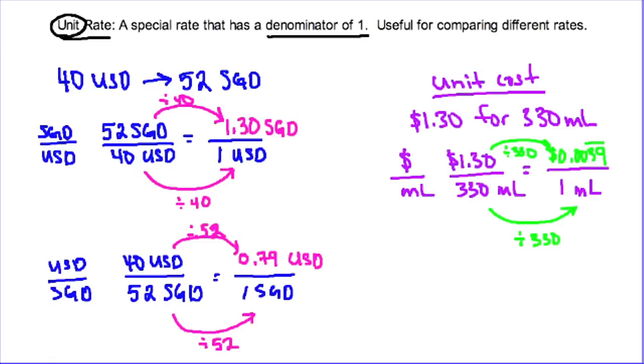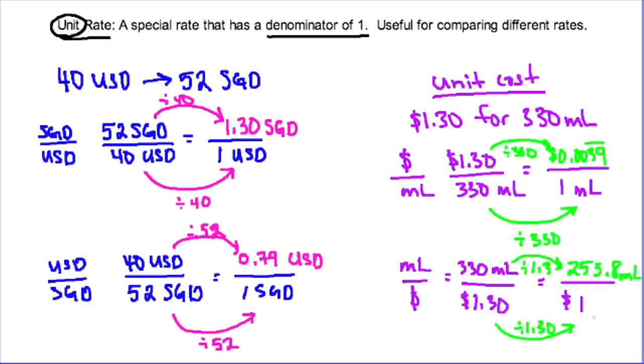The same can be done when you're looking at unit costs. Maybe instead of finding the cost per milliliter, I want to find out how many milliliters I get for one dollar. So I start with the same thing again: 330 milliliters costs me one dollar thirty cents. But this time I want to find out what I'm going to get for one dollar. I'm going to divide both halves of my ratio by 1.3. And when I do that, I get 253.8 milliliters. So this is telling me that for one dollar I can get 253.8 milliliters of this particular drink.